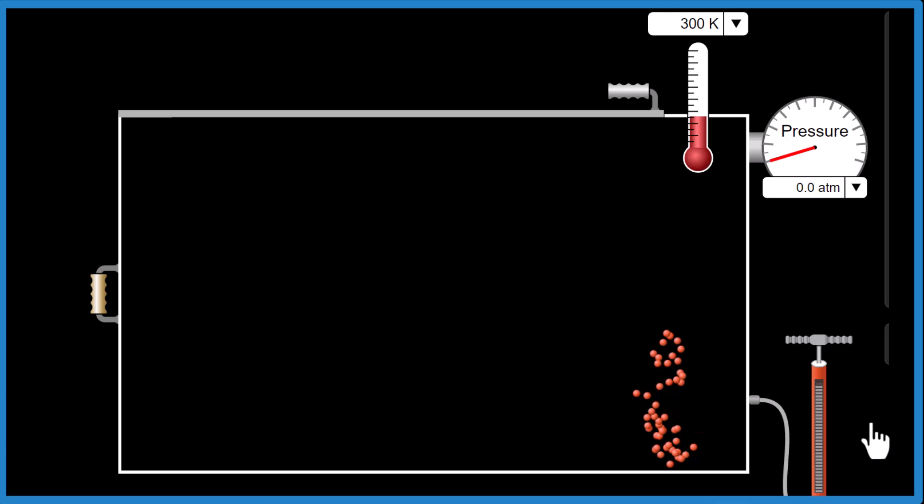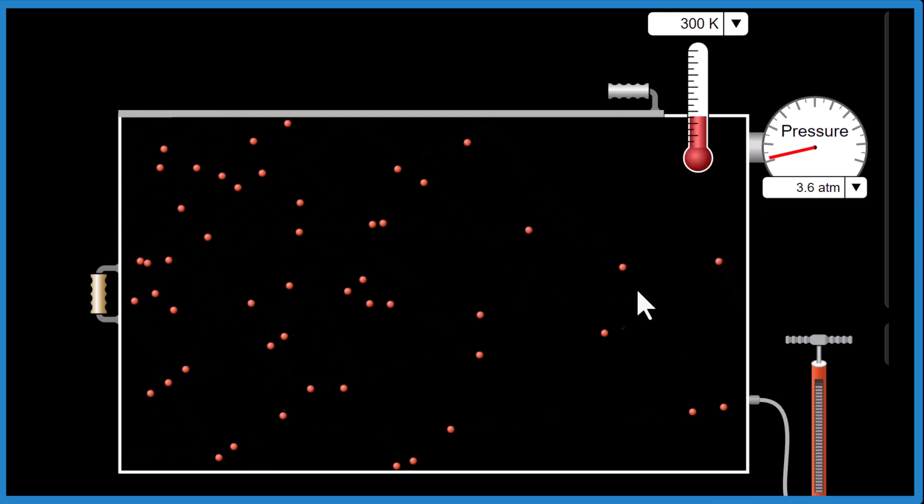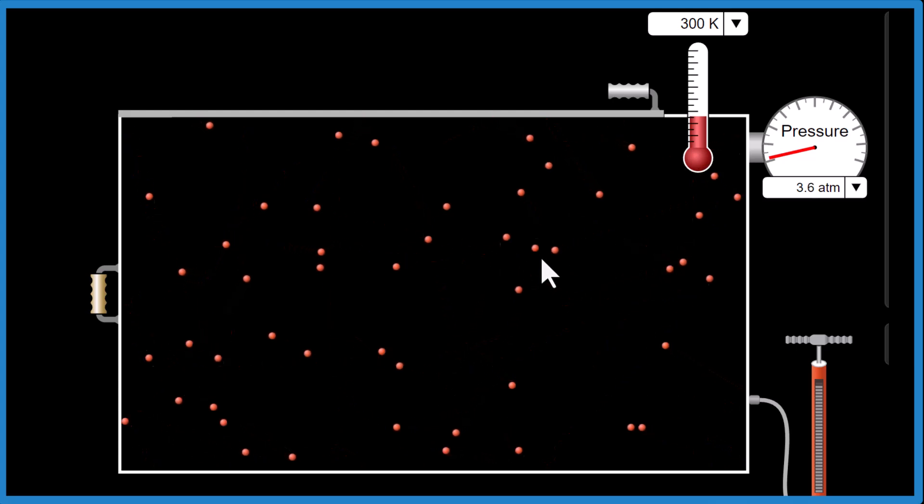For ideal gases, we assume that molecules don't take up any space, even though they do. When we have these low pressures here, though, most of this space is unoccupied. It's empty. So it doesn't matter much that they take up a little bit of space.